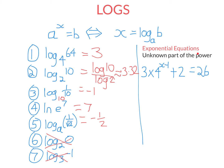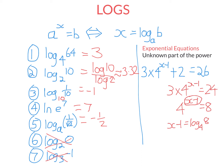Logs are really useful at solving exponential equations where the thing you want to find is part of the power. In this exponential equation, we undo what's been done to x in the opposite order to BIDMAS. First subtract 2 from both sides, then divide each side by 3. Now we have 4 to the power of something equals 8. Logs would be very useful here — x minus 1 equals log base 4 of 8. Log base 4 of 8 is equal to 1.5, because 4 to the power of 1.5 equals 8. So x minus 1 equals 1.5, and x is equal to 2.5.